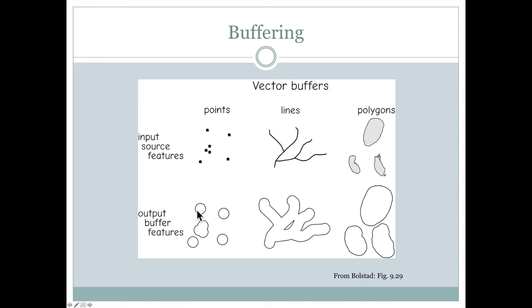If we start with points, we're going to get mostly circles or things that look like overlapping circles. But in this case, the central part is dissolved out. If we start with lines, we're also going to get these elongate-shaped polygons. And if we start with polygons, we're going to get bigger, more rounded polygons.